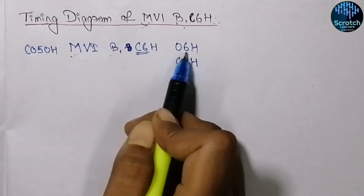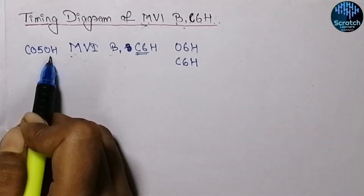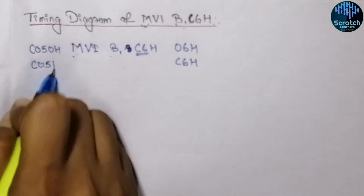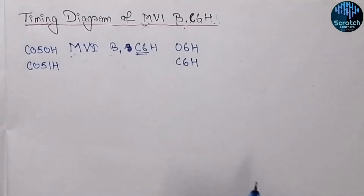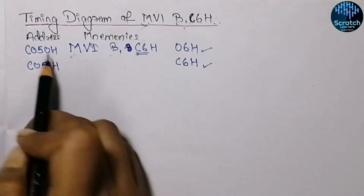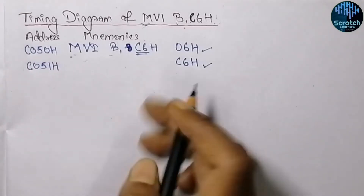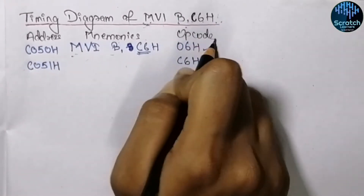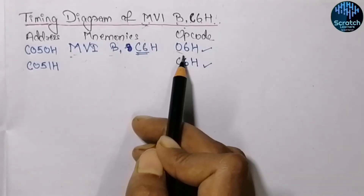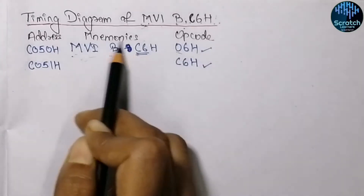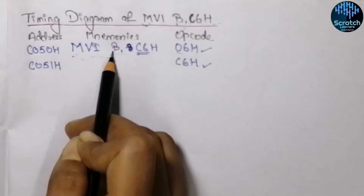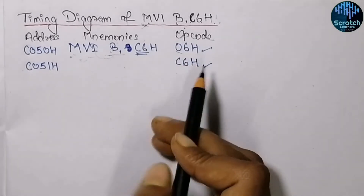Let's say we are executing this instruction at address C050H. So 06H is stored at address C050H, and the second byte is stored at address C051H — hence this is a two-byte instruction. The first byte is the opcode and the second byte is the data. The first byte, 06H, represents the opcode for loading a byte into register B, and the second byte is the data to be loaded into register B.